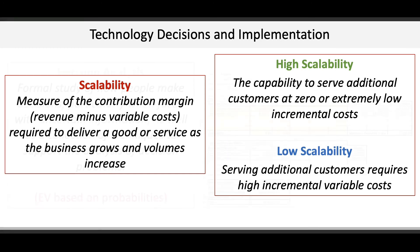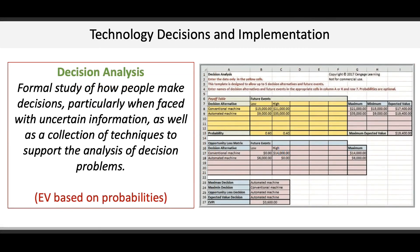Another aspect of technology decisions and implementation is decision analysis, which is a formal study of how people make decisions, particularly when faced with uncertain information, as well as a collection of tools to support the analysis of decision problems. Here, we use tools like decision trees and expected value, or EV, based on probabilities.